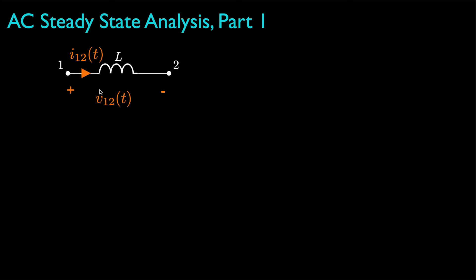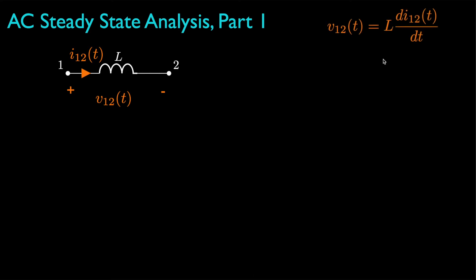For instance, if V12 is the voltage drop from node 1 to node 2, and I12 is the current flowing in the direction from node 1 toward node 2, then the voltage across the inductor is equal to the inductance times the derivative of the current through the inductor with respect to time.